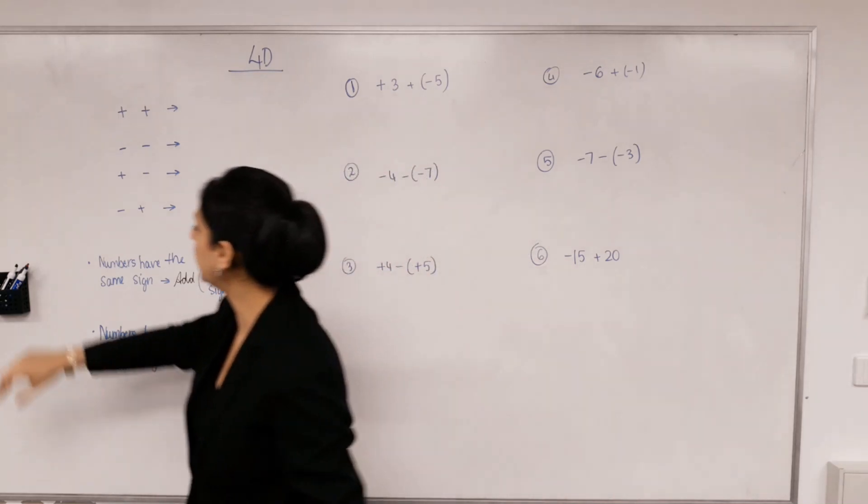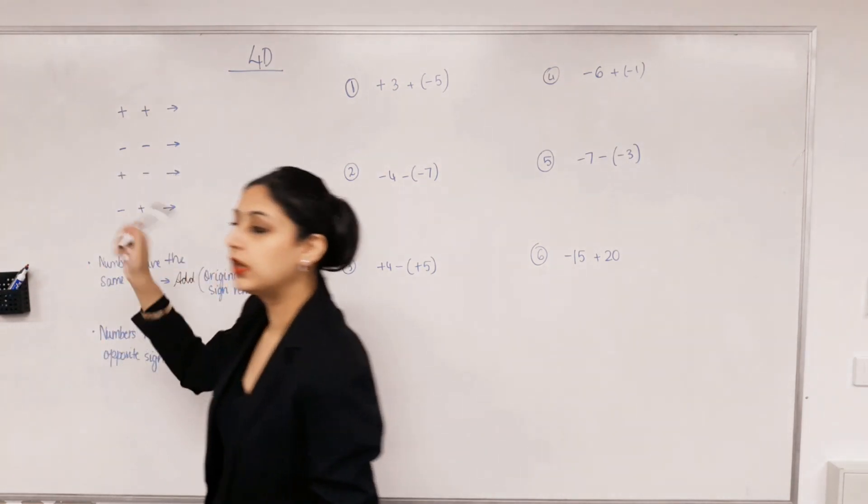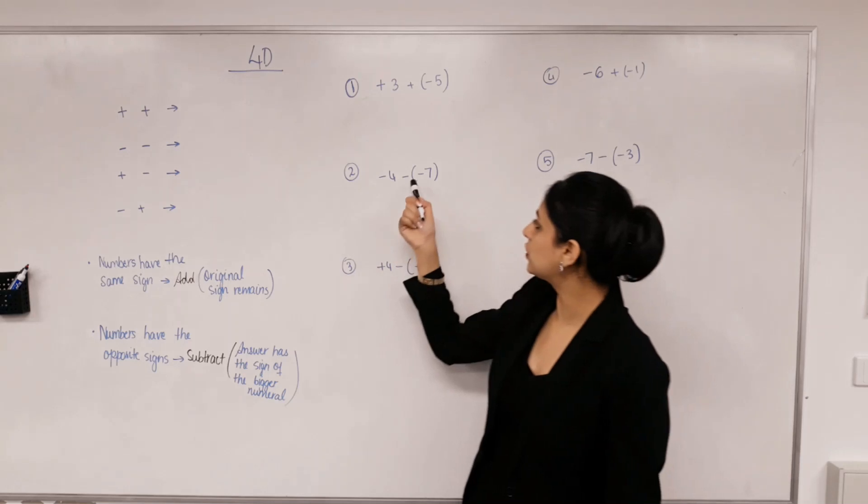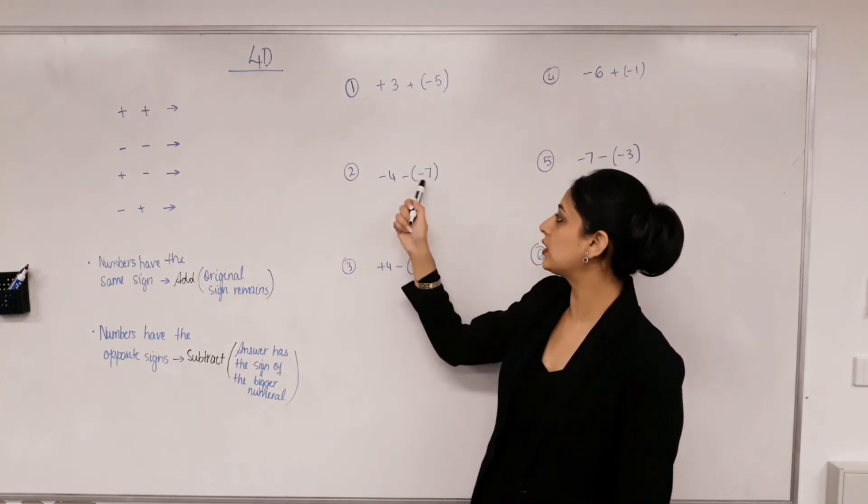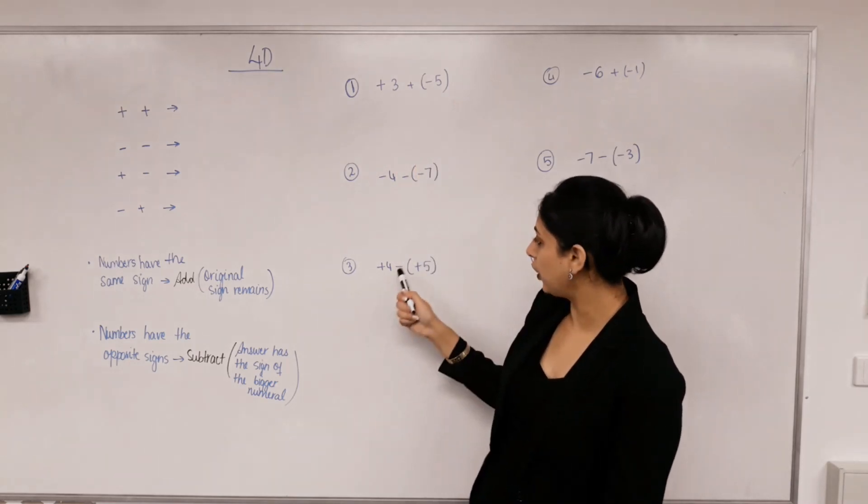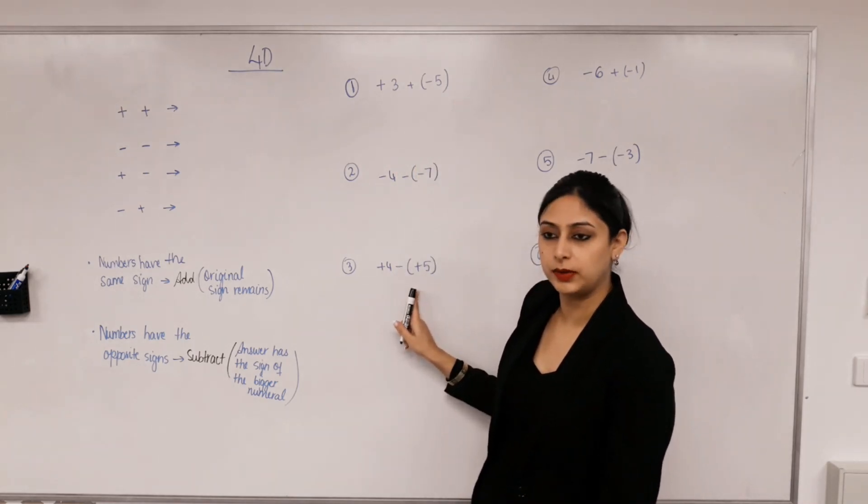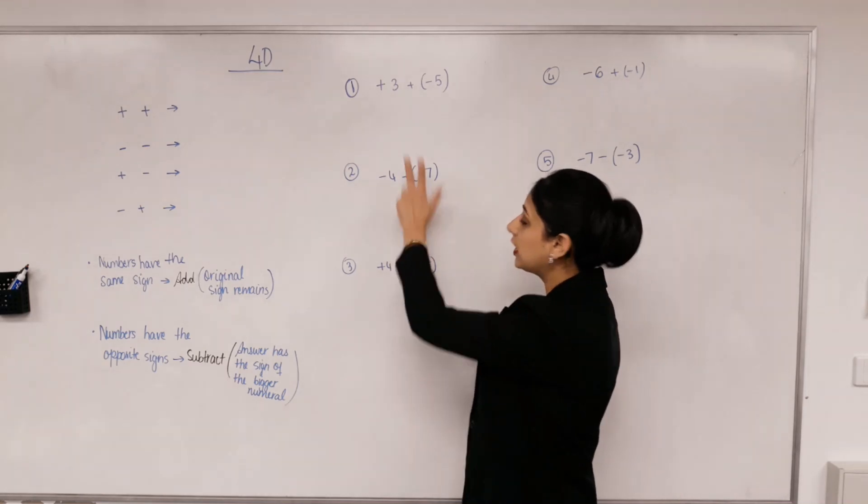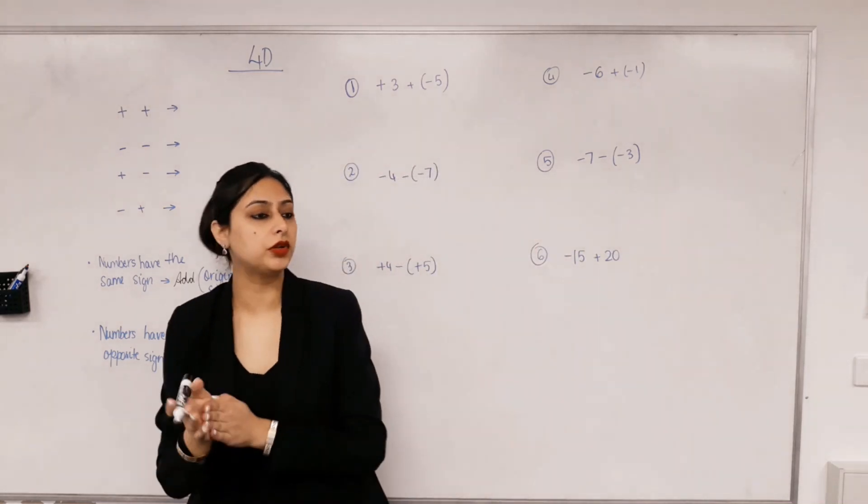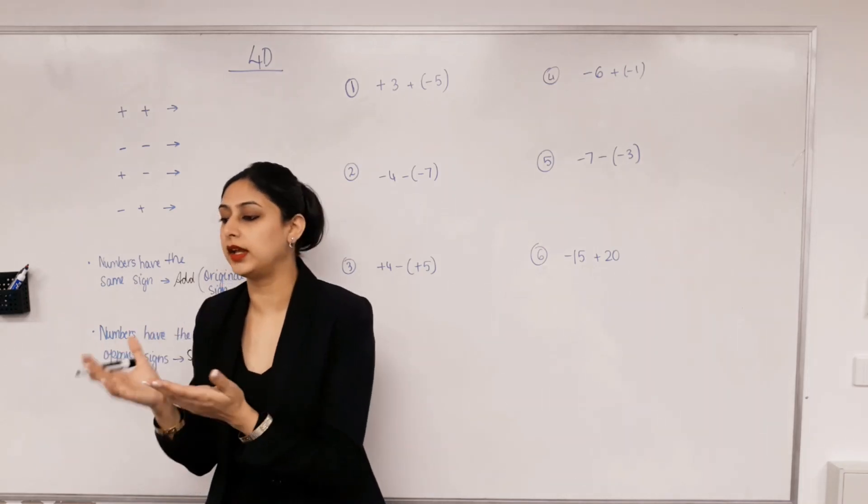Alright before we move on to the actual addition and subtraction there are some rules we need to look. So if you have two signs next to each other, so like a negative and a negative, so basically you're subtracting a negative number or you're adding a negative number. So the first step in these questions is to get rid of the two signs and put whatever they're equivalent to.